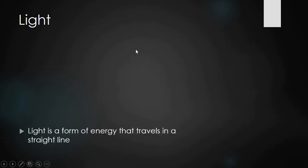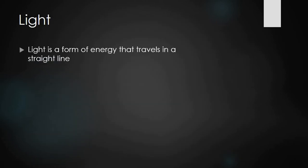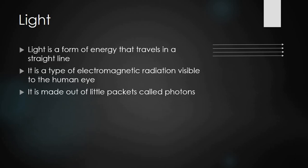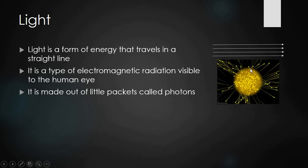Now let's move to light. Light is a form of energy that travels in a straight line. It is a type of electromagnetic radiation visible to the human eye. We will discuss electromagnetic radiation in more detail shortly. Light is made out of little packets called photons. Photons have no weight and no mass — they are simply packets of energy.